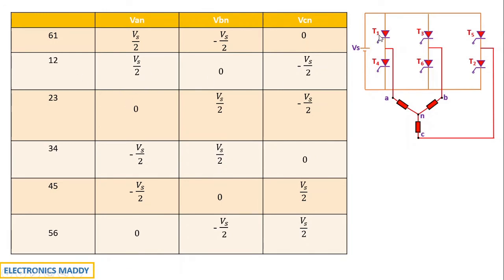For 1-2 conducting: thyristor 1 connects phase A to positive, so Van = Vs/2. Thyristor 2 corresponds to phase C and is connected via the negative terminal, so Vcn = -Vs/2. Since no switches for phase B are conducting and it is not connected to the supply, Vbn = 0.